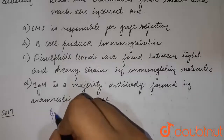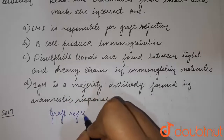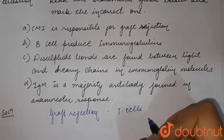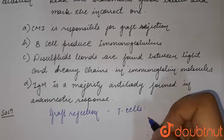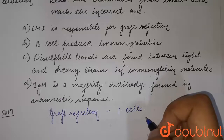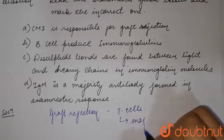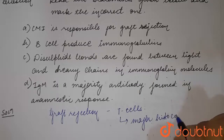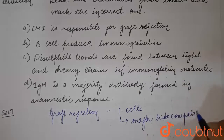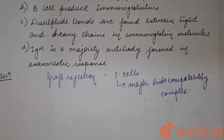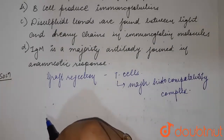If we talk about graft rejection, the main role in graft rejection is of the T cells. These T cells see the non-MHC molecules and it is relatively high, making a difference at MHC level — the major histocompatibility complex. So, the CMI, which is cell mediated immunity, does not have anything to do with it.